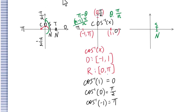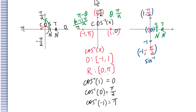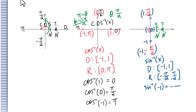For inverse sine of x, the coordinates range from negative 1 to 1, with range between negative pi over 2 and pi over 2. Inverse sine of negative 1 equals negative pi over 2. Inverse sine of 0 equals 0. Inverse sine of 1 equals pi over 2.